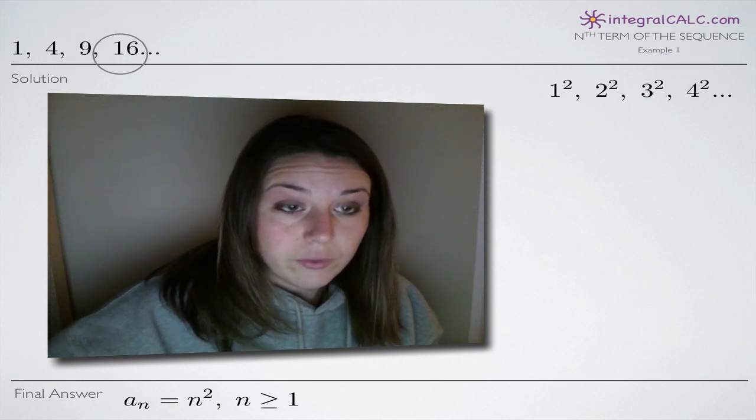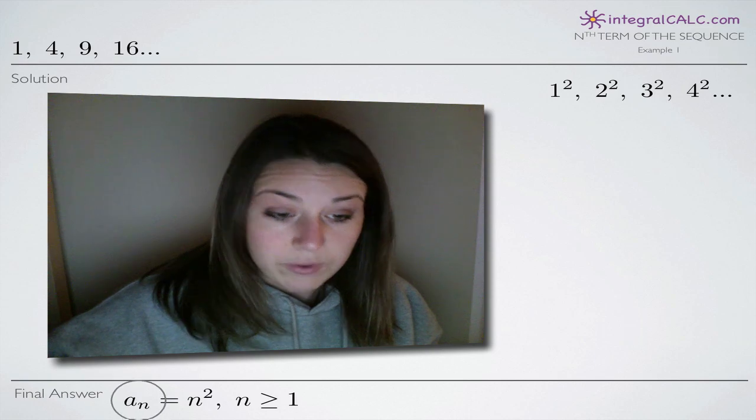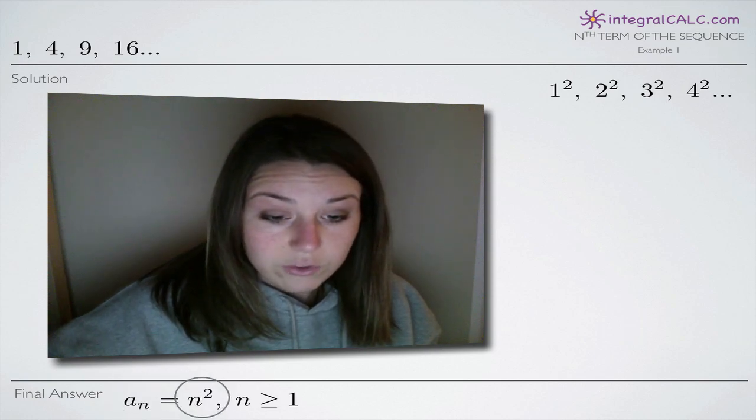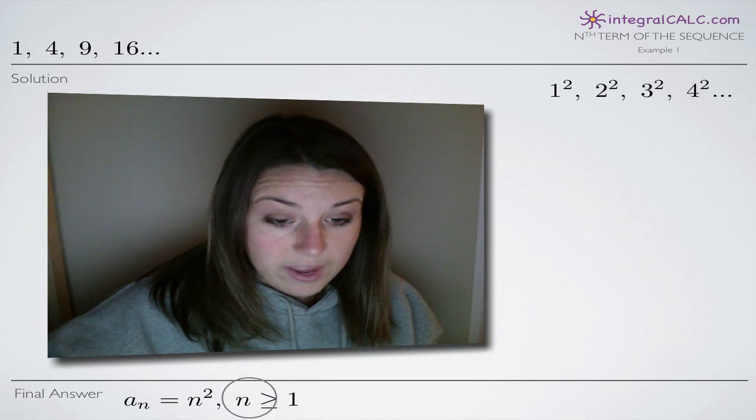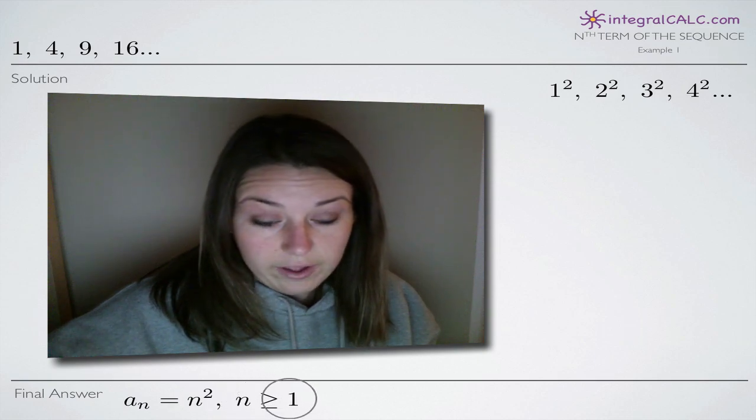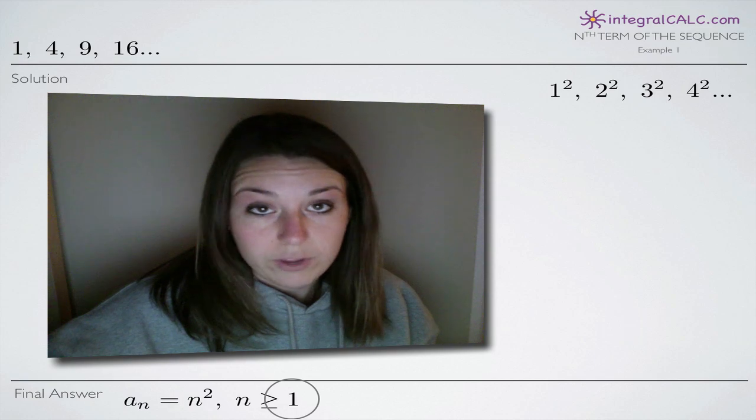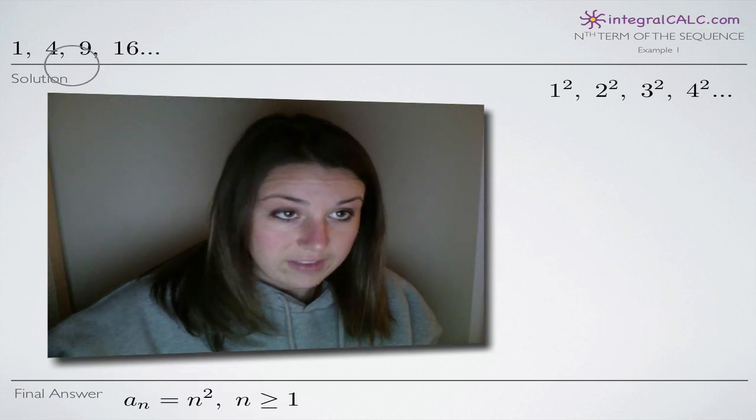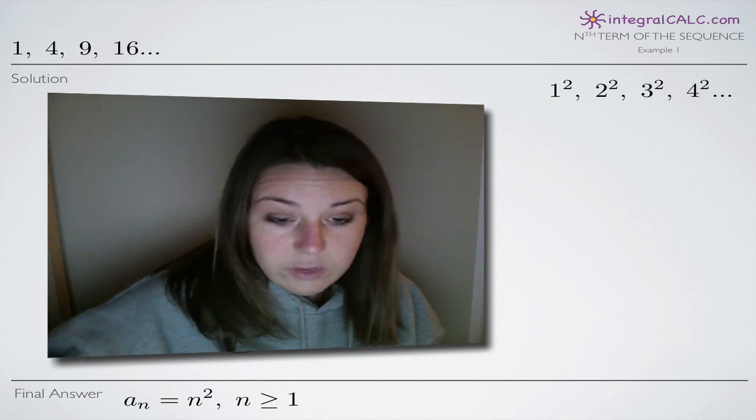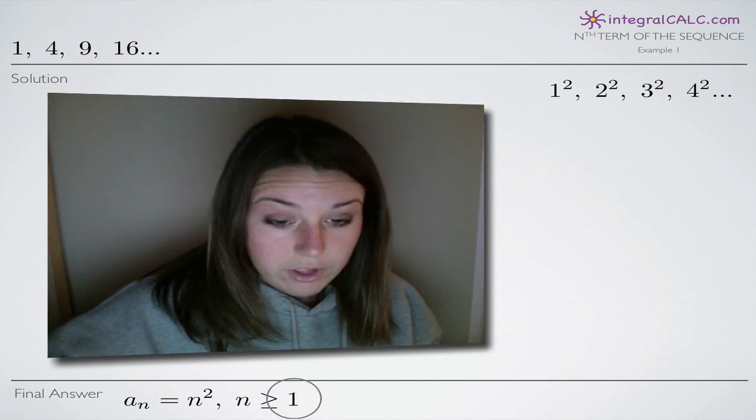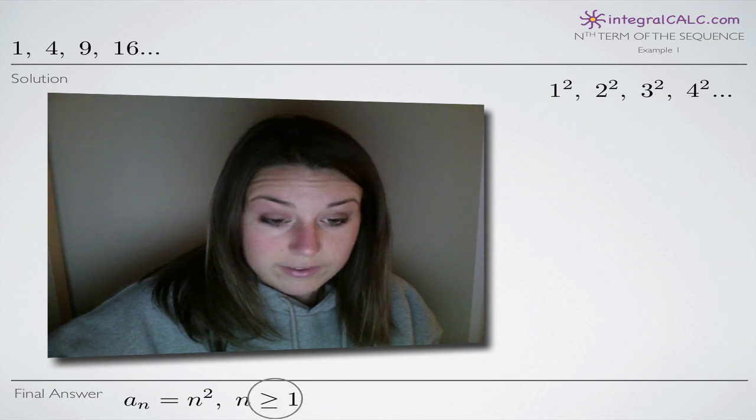So this sequence that we're given can actually be written a sub n, which is sequence notation, equal to n squared. And then we have to remember that we're going to start our sequence at 1. n has to start at 1 or something greater. We could start at 2, that would still apply. If we plugged in 2, we get 4. That's still a member of our sequence. But we have to at least start at 1. We can't start at 0 or any negative numbers. So n must be greater than or equal to 1.